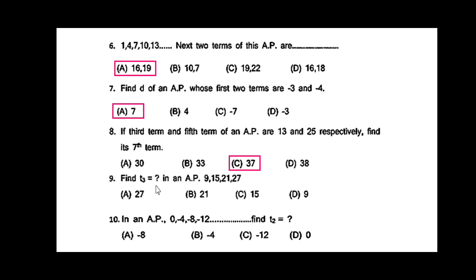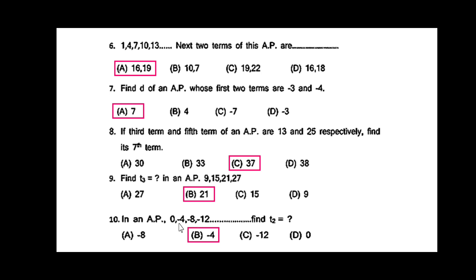Find T3 in the AP 9, 15, 21, 27: T3 = 21. In the AP 0, -4, -8, -12, find T2: T2 = -4.